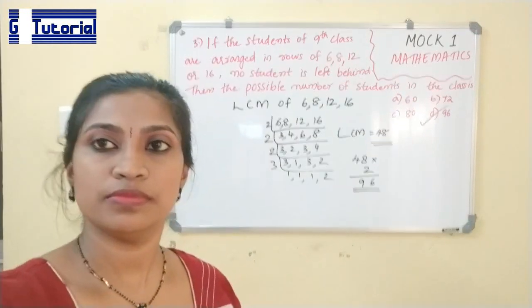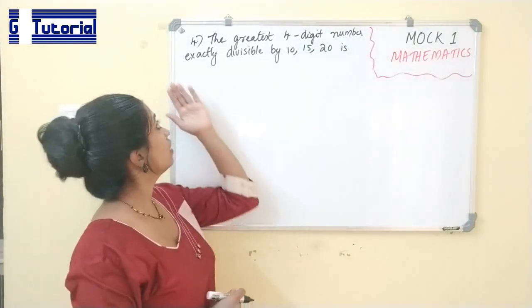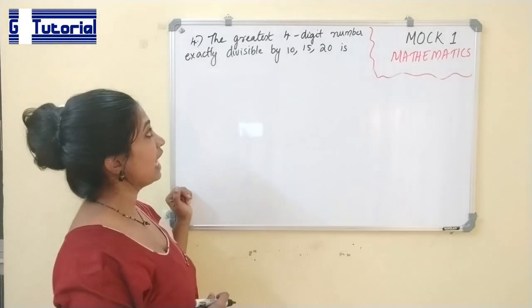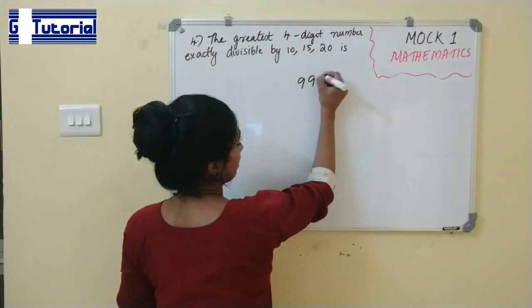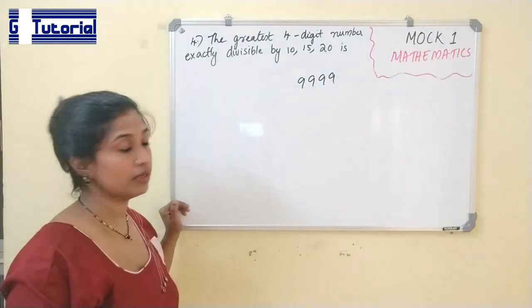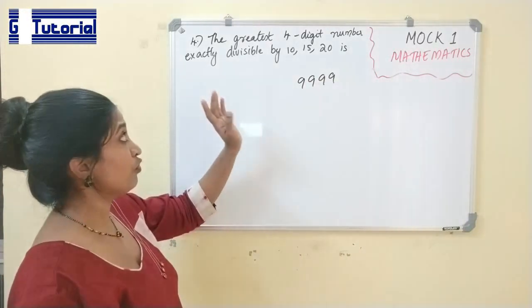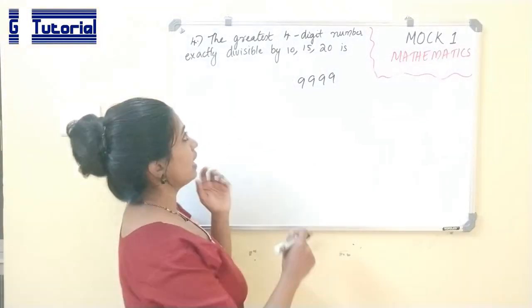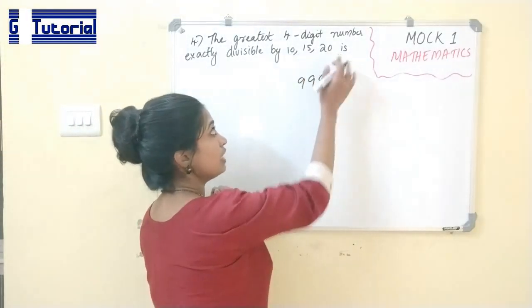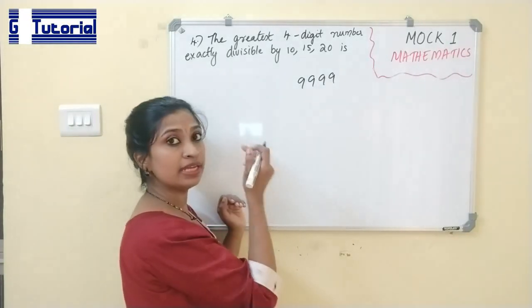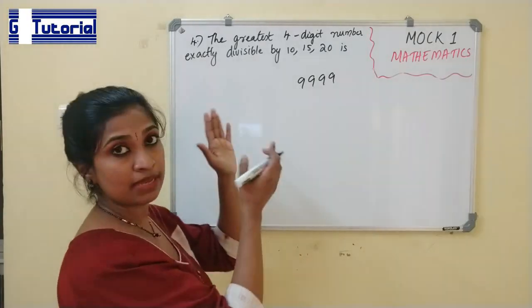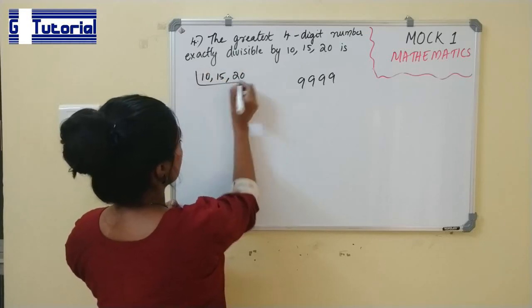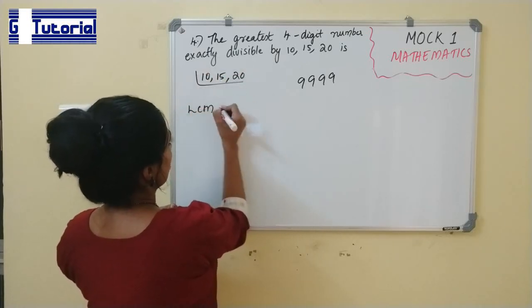Next question: the greatest 4-digit number exactly divisible by 10, 15, and 20. The greatest 4-digit number is 9999. If a number is divisible by these three numbers, it is also divisible by their LCM. The LCM of 10, 15, and 20 is 60.